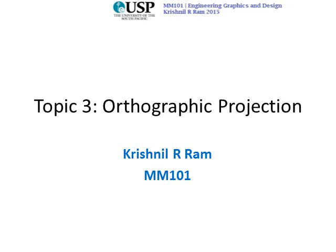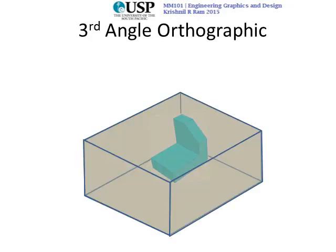Welcome students to Topic 3, Orthographic Projections - this is Part 3 of your 3-part lecture video series on orthographic projections for MM101 Engineering Graphics and Design. Let's recap what we have done so far: we have looked at the basic principles of orthographic projections, how the quadrants are made, why the first and third quadrants are the only useful projections. In Part 2 we covered first angle orthographic projection. Now let's look at third angle orthographic projection.